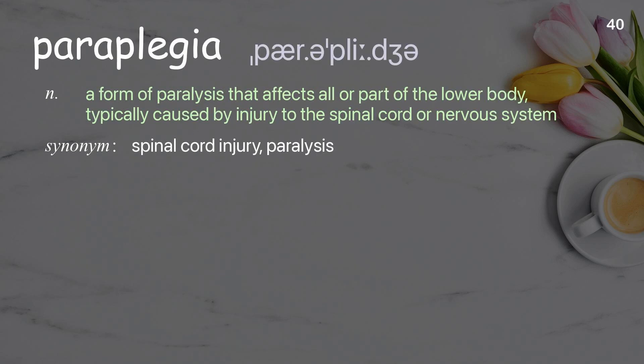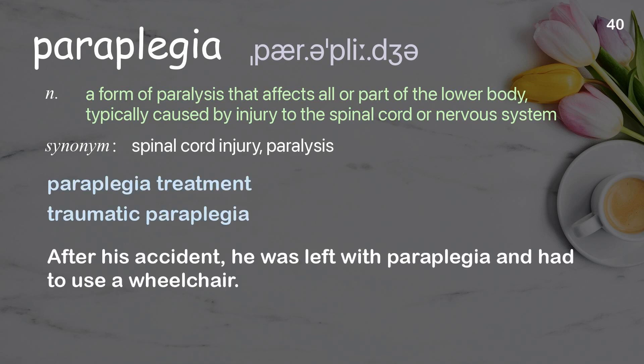Paraplegia: a form of paralysis that affects all or part of the lower body, typically caused by injury to the spinal cord or nervous system. Examples: paraplegia treatment, traumatic paraplegia. After his accident, he was left with paraplegia and had to use a wheelchair.